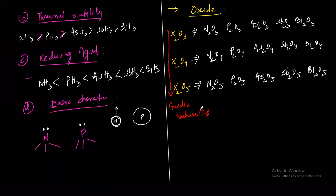Next, for a particular type of oxide — for example, all the trioxides — the acidic nature decreases as we go down the group.